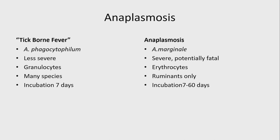In tick-borne fever, Anaplasma is present in the granulocytes or neutrophils, and in anaplasmosis caused by A. marginale, they're present in the erythrocytes. That's responsible for a lot of the difference in severity: you get a leukopenia associated with tick-borne fever and an anaemia associated with A. marginale. Tick-borne fever can infect several species — cattle, sheep, horses, and even humans, so it's a zoonotic disease — whereas A. marginale is specific to ruminants. The incubation period tends to be shorter in tick-borne fever compared to A. marginale.